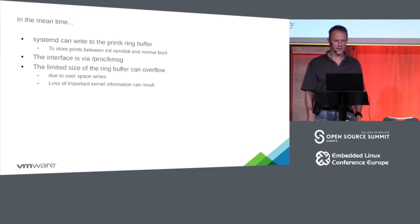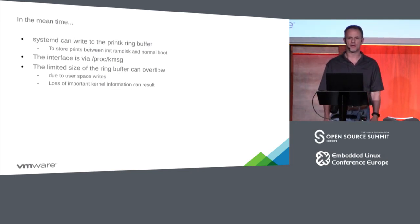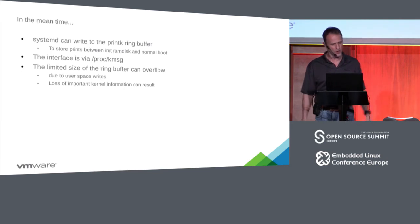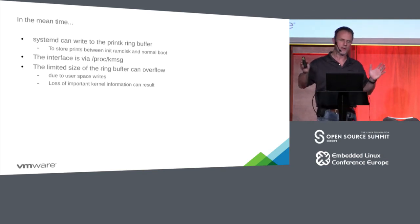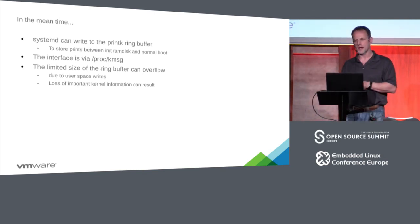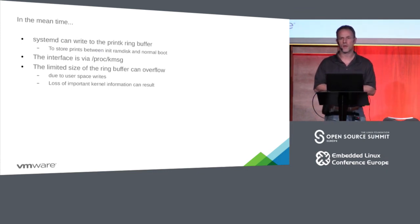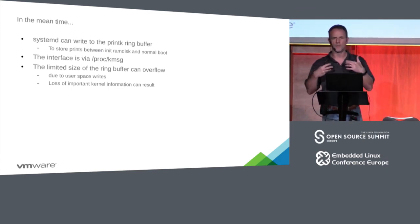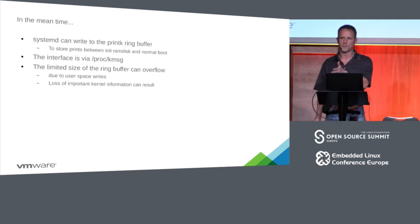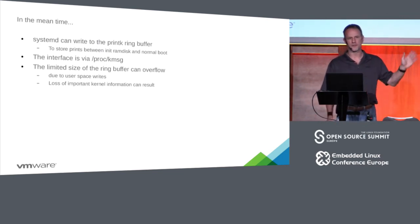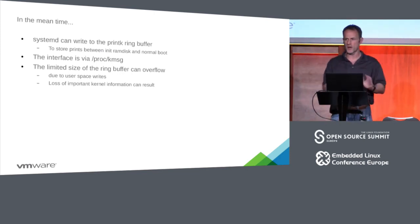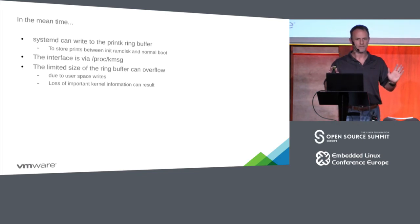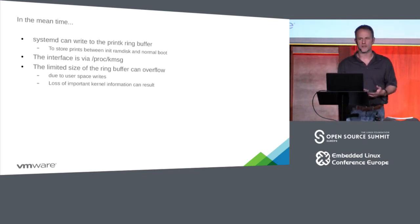In the meantime, systemd likes to write to printk. User space can write into that fixed-size memory ring buffer via the /proc/kmsg interface. Unfortunately, if user space goes crazy or there's a bug, it just spits into the buffer. If there was a kernel bug that did a printk and triggered a WARN_ON, systemd could then spit a bunch of debugging output on top and you just lost the WARN_ON. This is one of the issues that needs to be fixed.